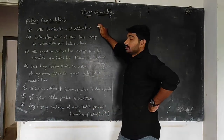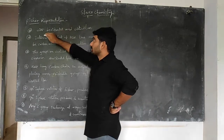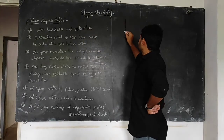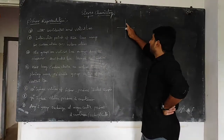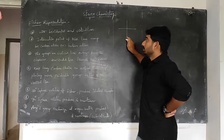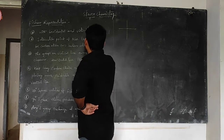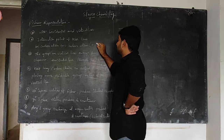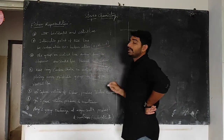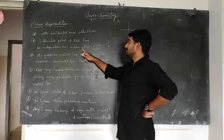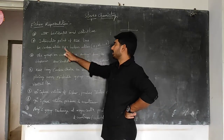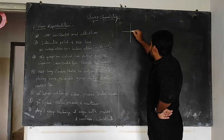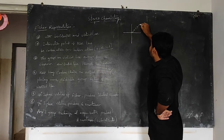The first important point about Fischer representation is that the molecule is represented with horizontal and vertical lines. The intersection point of these lines may be a carbon atom or a heteroatom. A heteroatom means atoms other than carbon — such as oxygen, nitrogen, sulfur, or phosphorus.